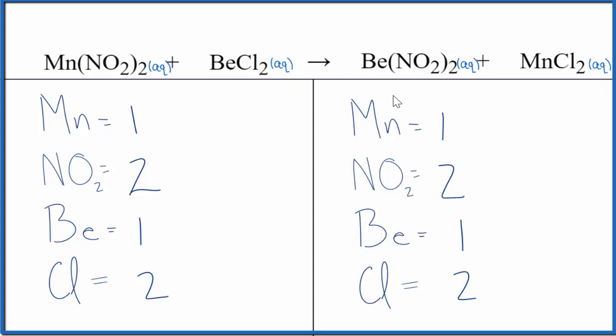So type of reaction, double displacement, probably doesn't happen though. But that's it. That's the balanced equation. It's already balanced, although the reaction probably doesn't take place. This is Dr. B and thanks for watching.